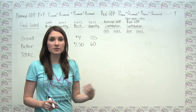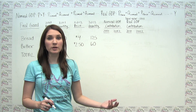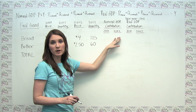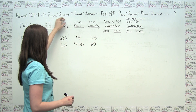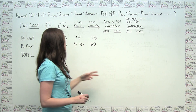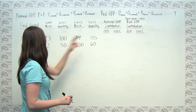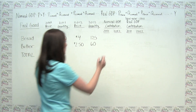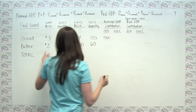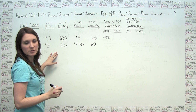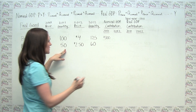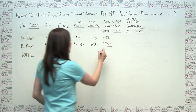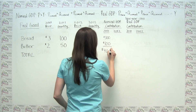Calculating nominal GDP is what we did when we first introduced the concept of calculating GDP. For any given year — whether it be 2011 or 2012 — we're just going to be taking current prices and multiplying by current quantities. So for 2011, bread's contribution to GDP is just the 2011 price times the 2011 quantity, or $300. Butter's contribution to 2011 nominal GDP is $2 times 50, or $100, which gives us $400 of total nominal GDP for 2011.